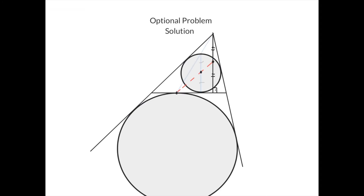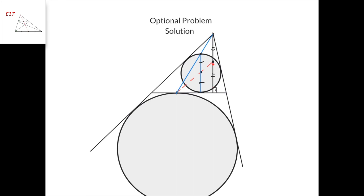Here's the solution. We know that if we take this tangency point and its diametrically opposite point in the incircle, then these three points lie on a straight line, as proved earlier. Now we just need to apply Steiner's theorem for this trapezoid, in which these two sides intersect here. Therefore, the midpoint of one of its bases and the midpoint of the other base lie on a straight line with this intersection point.